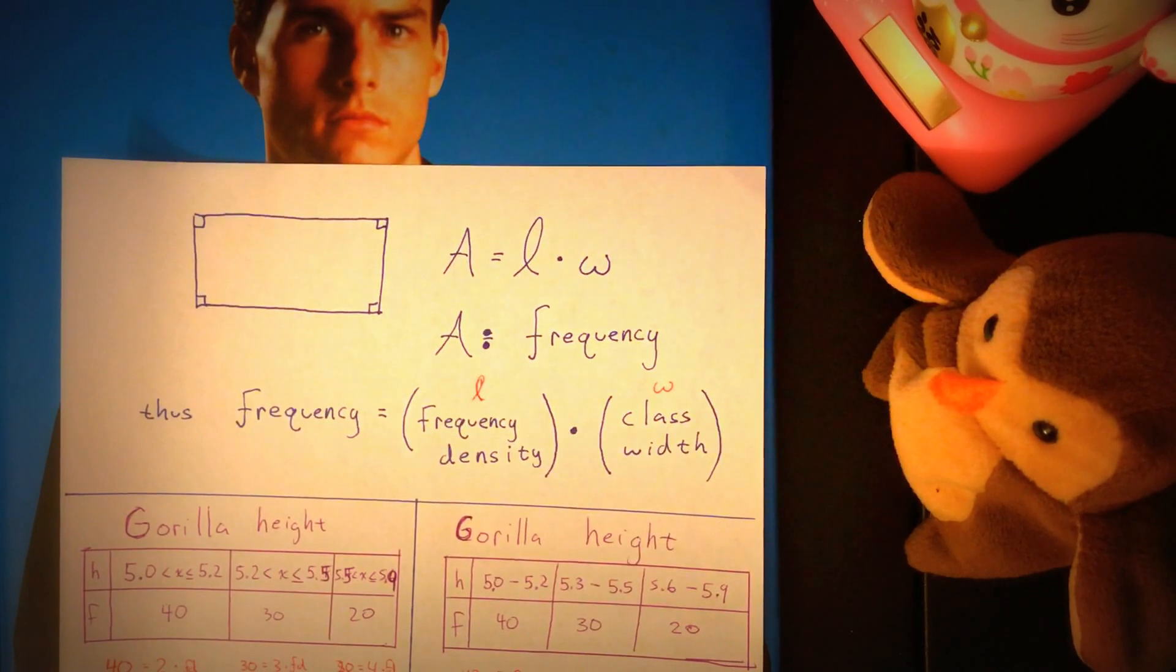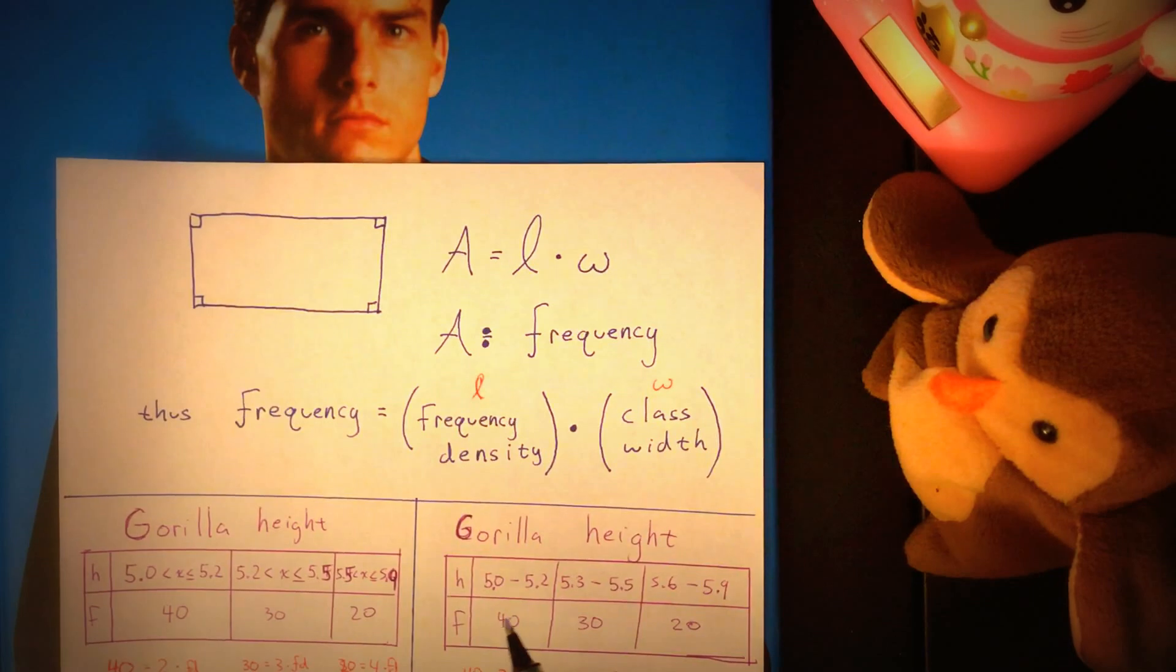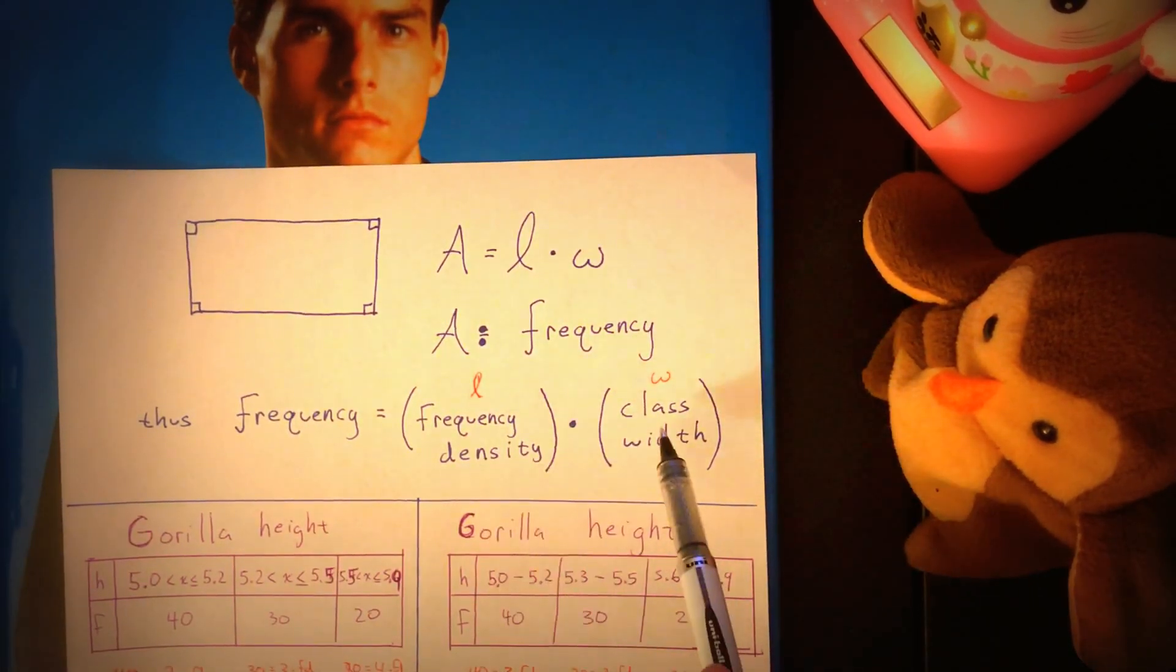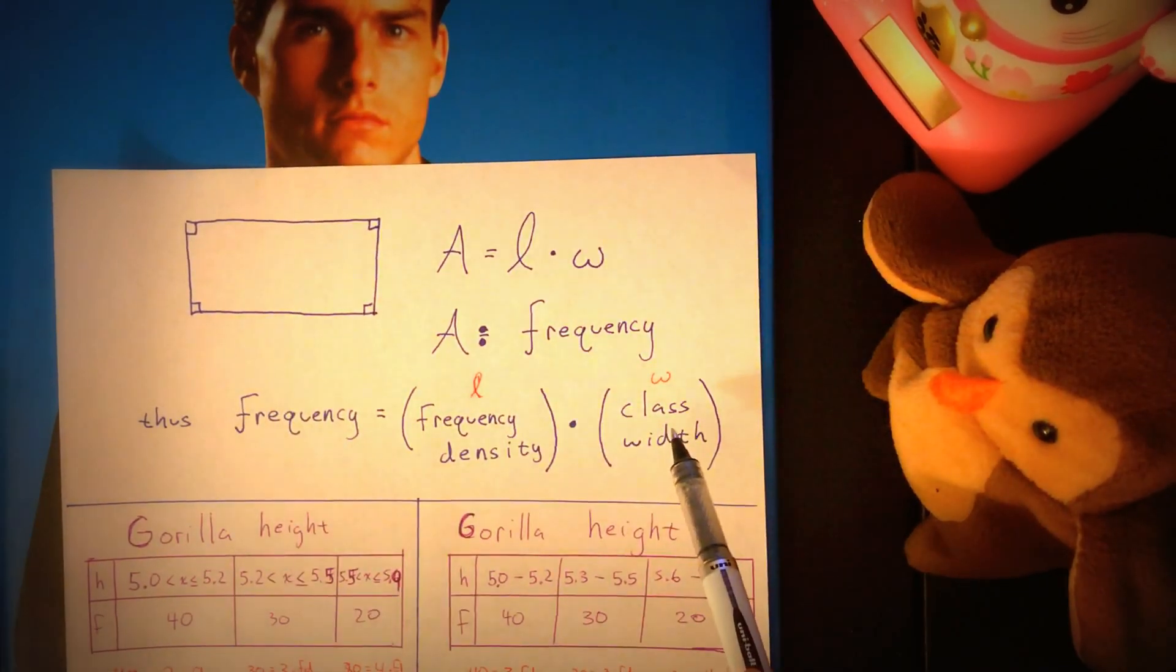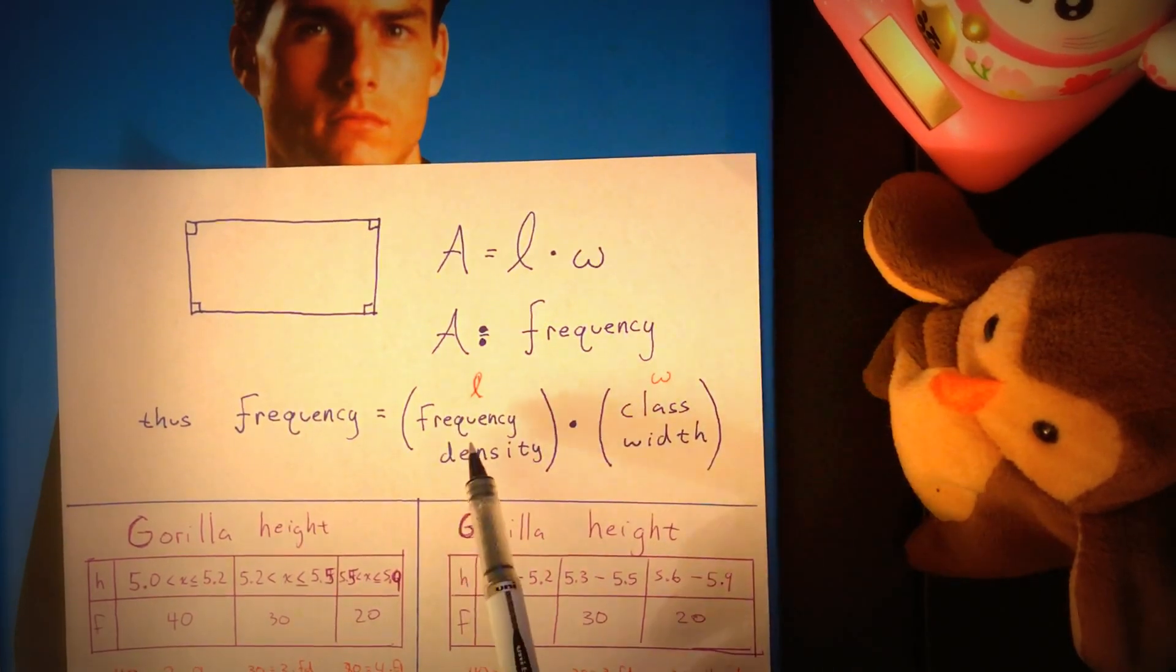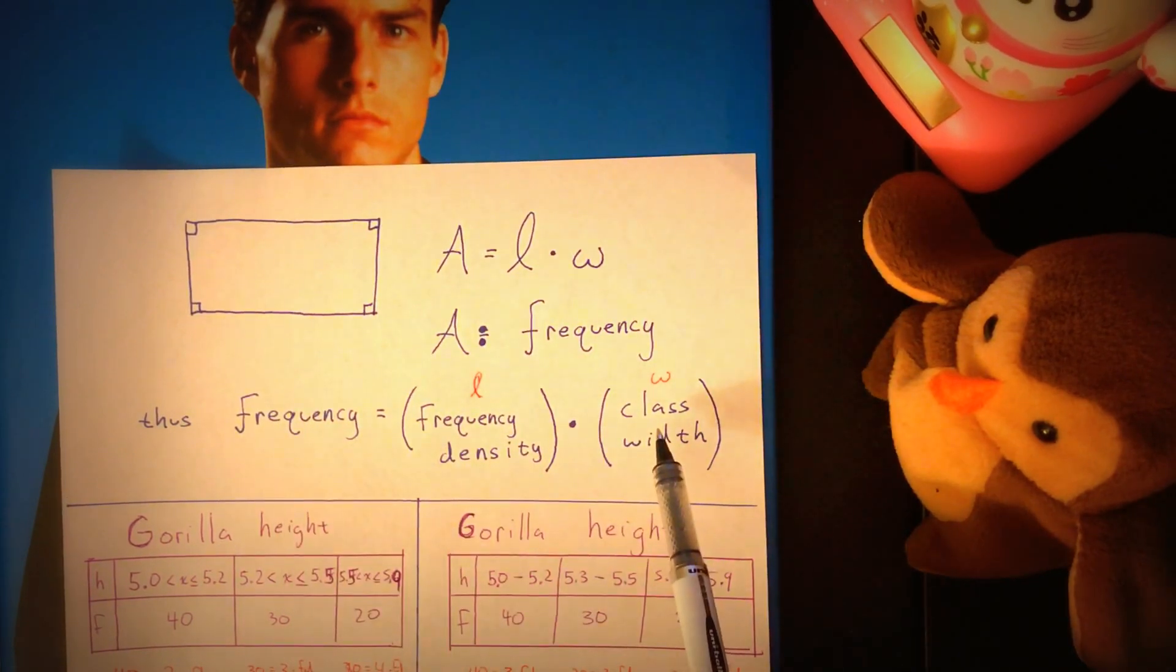Not all books teach it like this, but this is what they want here for ACE. So rather than area equals length times width, if area is frequency, our length and width will be the class width, which is just the width of the rectangle on the x-axis. This is what you'd expect. And this other category they're calling frequency density. And usually this is what we're solving for, because they give us frequency and class width in the table. So simply by dividing both sides by class width, we can find frequency density.